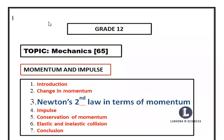Good day, great Grade 12s. This is video number three of momentum and impulse — Newton's second law in terms of momentum. Remember, momentum is the product of mass and the velocity of an object. Momentum is a vector quantity; it has magnitude and direction. The SI units for momentum are kg·m/s.